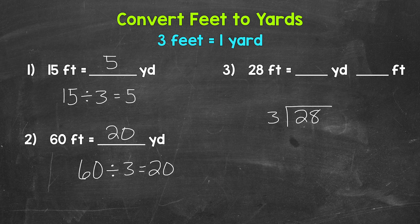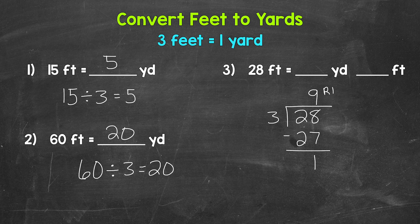As far as 28 divided by three, how many groups of three in 28? Nine. That gets us to 27 — that's nine yards. But we're not hitting 28 exactly; we have a remainder. Nine times three gives us 27, and 28 minus 27 gives us a remainder of one. That remainder of one represents an extra foot. So 28 feet equals nine yards, one foot.